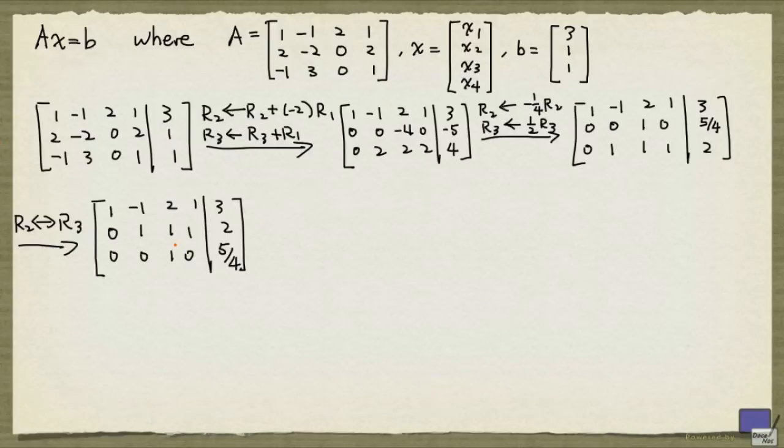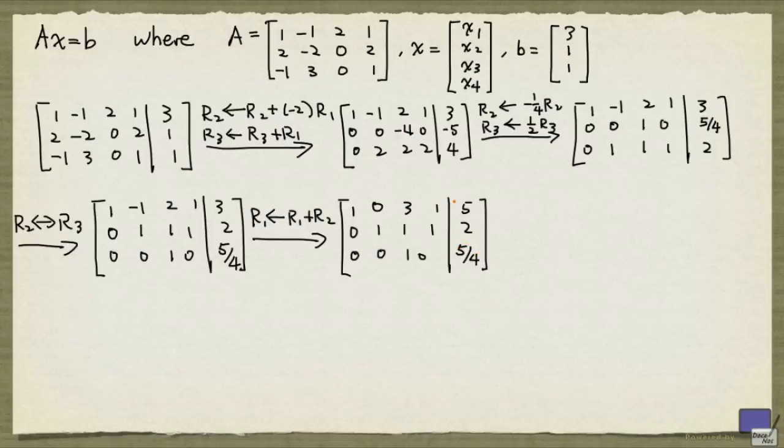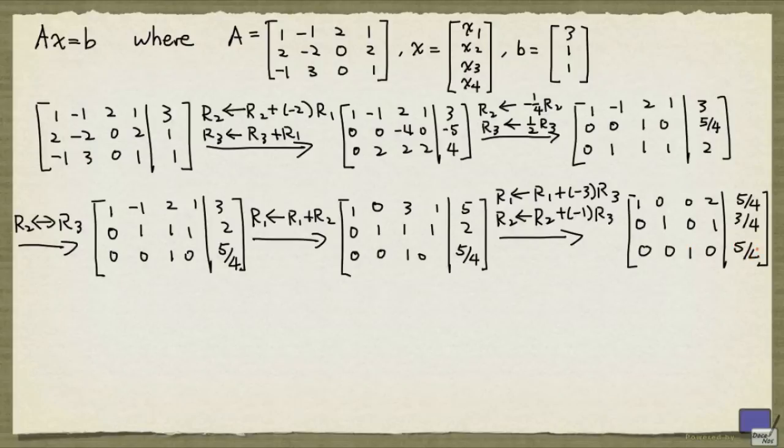To clear the entry above the leading one in row 2, we can simply add row 2 to row 1. And finally, we clear the entries above the leading one in row 3. And this matrix is in reduced row echelon form.